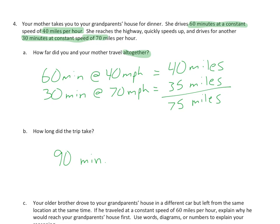For this question, see if you can pause the video and figure out how I got what I got, then I'll explain it. If we're going 60 minutes at 40 miles per hour — 60 minutes is one hour, so in one hour at 40 mph we go 40 miles. That just makes sense. 30 minutes is half an hour, so at 70 miles per hour, half that hour gives half those miles: 35 miles. So 40 and 35 together is 75 miles — that's the total distance of the trip.